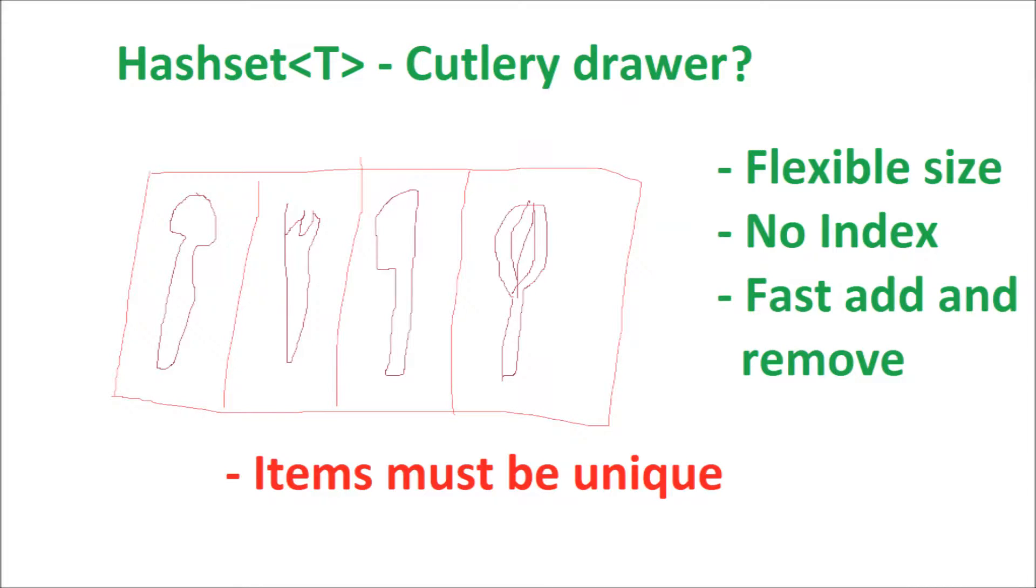Hash sets are great if you're only interested in if an item is present or absent from a collection, something like a list of selected units in an RTS game. Hash sets are also great if you are constantly adding and removing items from a collection.